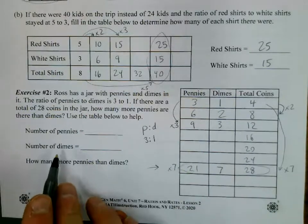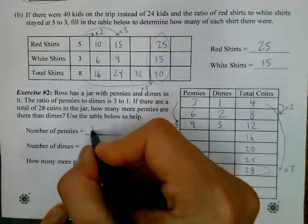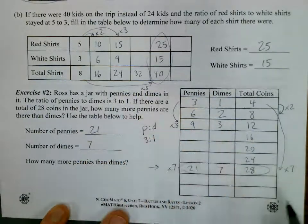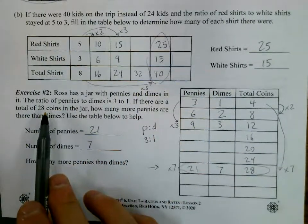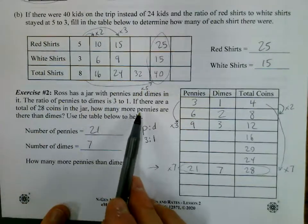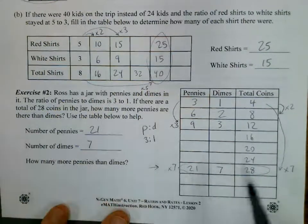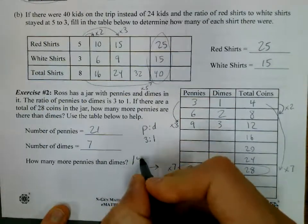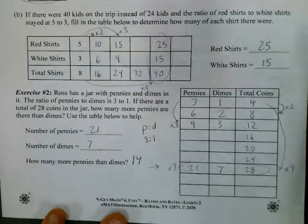So the number of pennies, 21. Number of dimes, seven. But now go back and reread the question, because look at what they're asking us. How many more pennies are there than dimes? So there are 21 pennies and seven dimes. That means there are 14 more pennies than dimes.